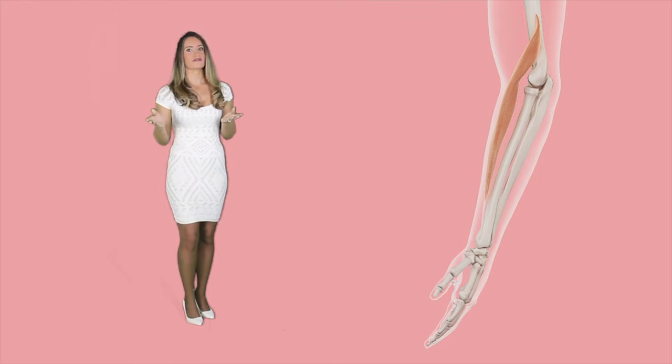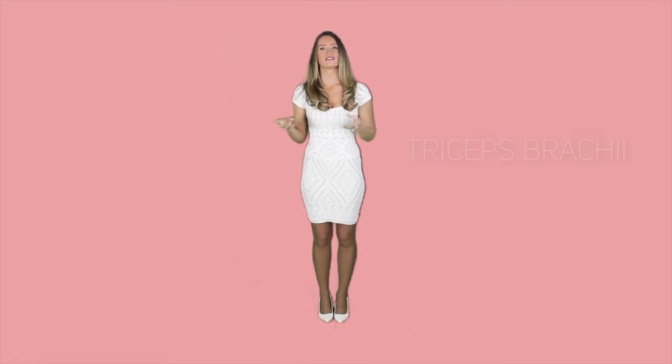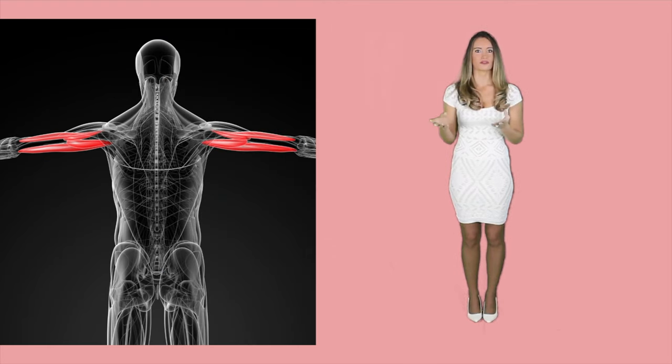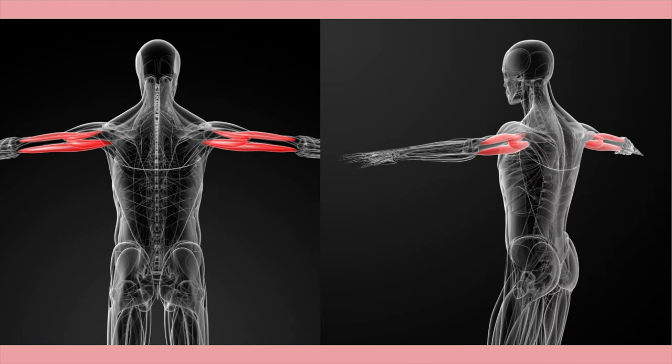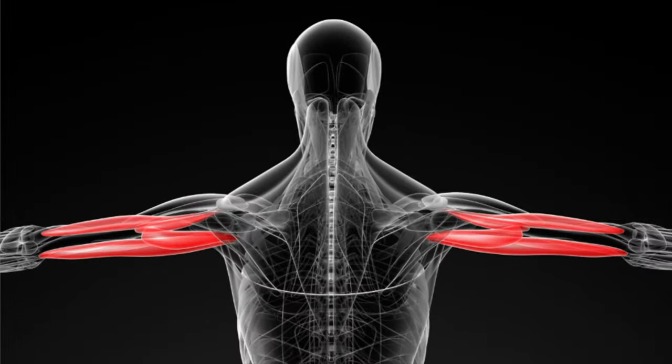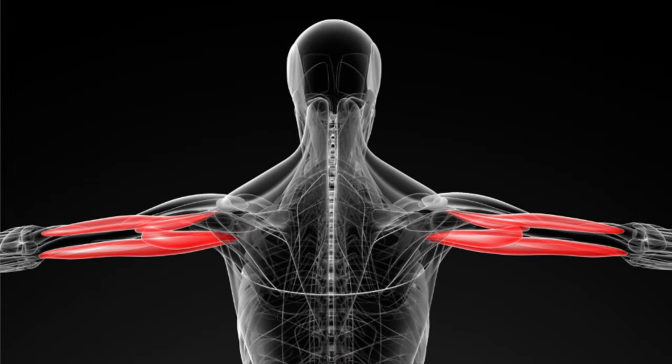Extensor muscles of the forearm are called the triceps brachii. It is the only back arm muscle with three heads. It links up the ulna with the humerus and also extends the elbow.